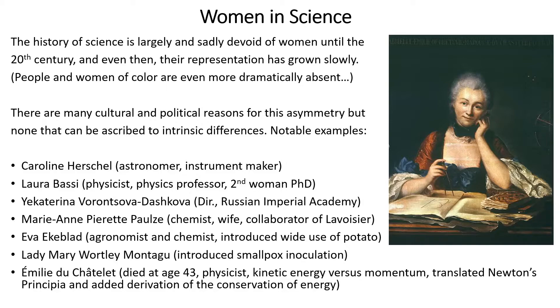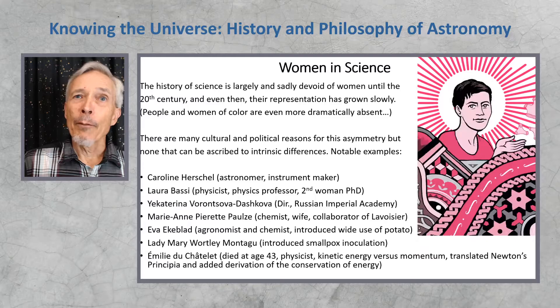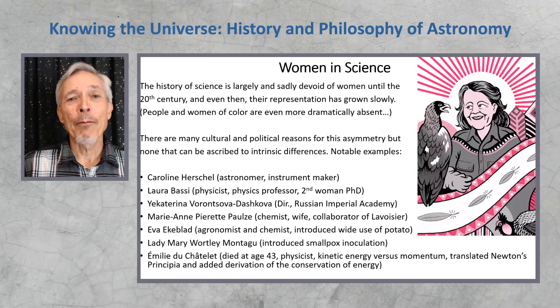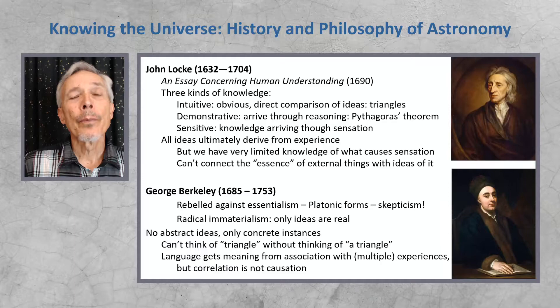We have Eva Eckeblatt, agronomist and chemist, who introduced widespread use of the potato as a cash crop. Lady Mary Wortley-Montagu introduced smallpox inoculation. And the woman pictured here on the right, Emily de Châtelet, who died sadly at the age of 43, was an extraordinarily broad scientist — a physicist who developed the ideas of kinetic energy and momentum, translated Newton's Principia into French, and added derivations including the conservation of energy. Since then, the number of women in science has grown, and here in kinetic form we see a montage of a number of them from the 20th century.